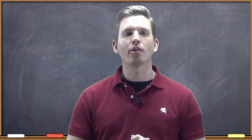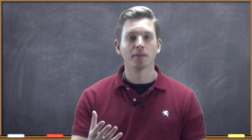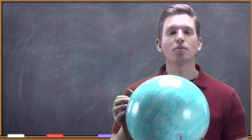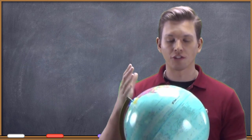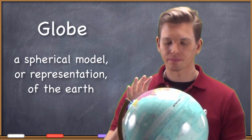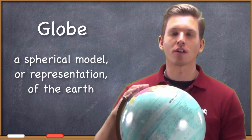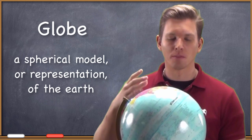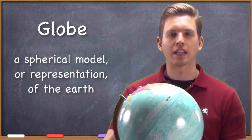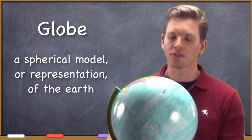Because it's a round object, an excellent way to depict the entire Earth is through the use of a globe, and I have one right here. A globe is a three-dimensional spherical model of the Earth. Sometimes you hear people talking metaphorically about living on a globe or traveling around the globe, but technically a globe is a scale model — it's not the same size as the Earth.